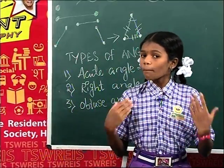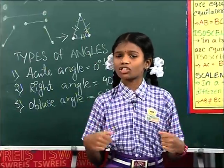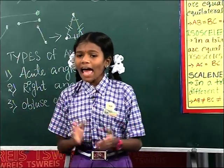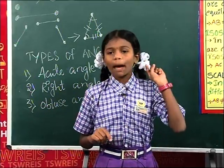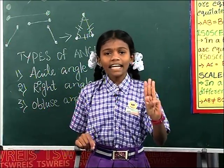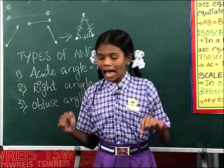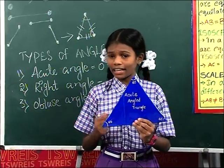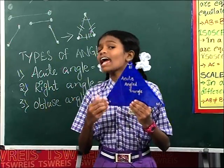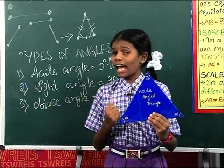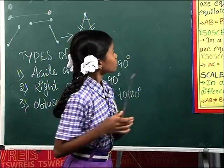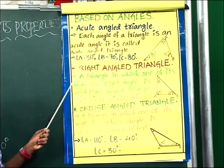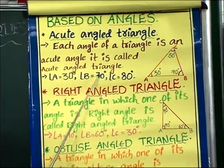Now we are going to discuss based on angles. Friends, in based on angles, we also have three types of triangles. They are the acute angled triangle, obtuse angled triangle, and right angled triangle. Acute angled triangle: in a triangle, if each angle is acute, it is called an acute angled triangle.